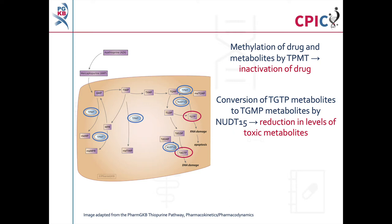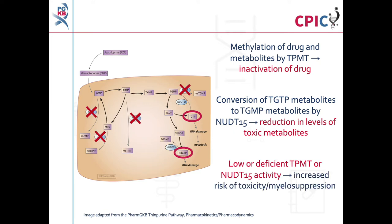If a patient has low or deficient TPMT activity, more molecules are available for conversion into active thioguanine nucleotide metabolites. This puts the patient at an increased risk of severe or fatal toxicity and at an increased risk of myelosuppression. It should be noted that some adverse reactions to thiopurine treatment, including pancreatitis and hepatotoxicity, are not linked to TPMT activity.